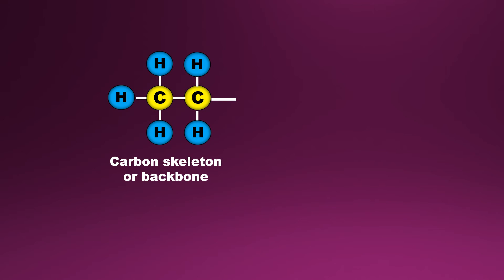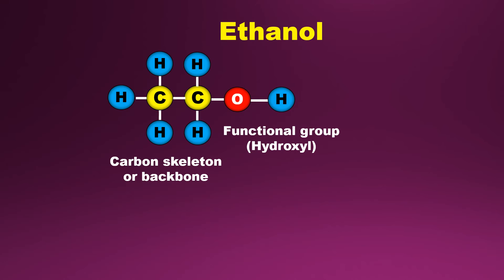Here we can see a carbon skeleton or backbone where any functional group can be attached to it. For example, here you can see hydroxyl functional group which is denoted as OH. So, when it is combined, we get ethanol.